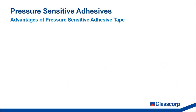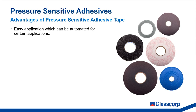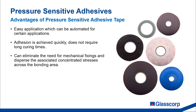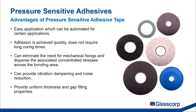Let's talk about some of the advantages of using pressure sensitive tapes. Firstly, tapes allow for easy application, which can be automated for certain applications. Adhesion is achieved quickly and is not reliant on long curing times. In some applications, tapes can eliminate the need for mechanical fixings and disperse the associated concentrated stresses across the bonding area. Tapes can also provide vibration dampening and noise reduction.